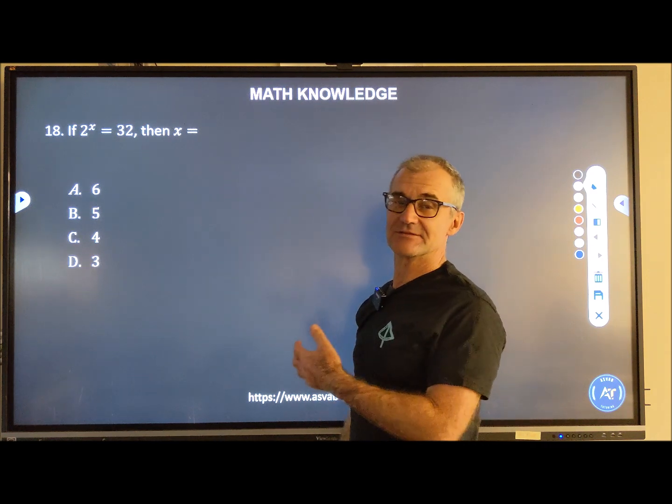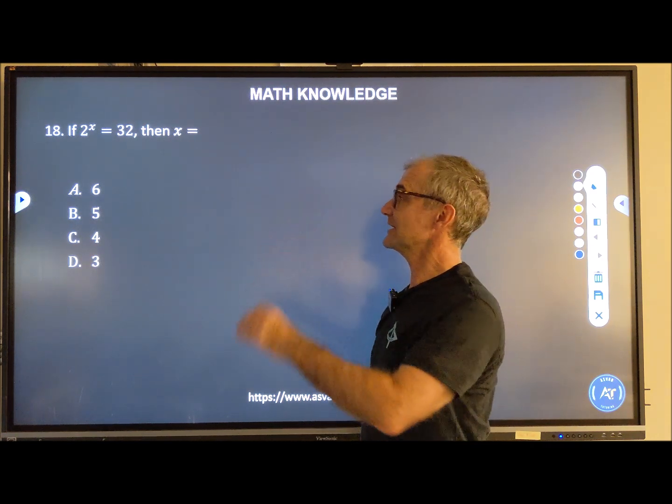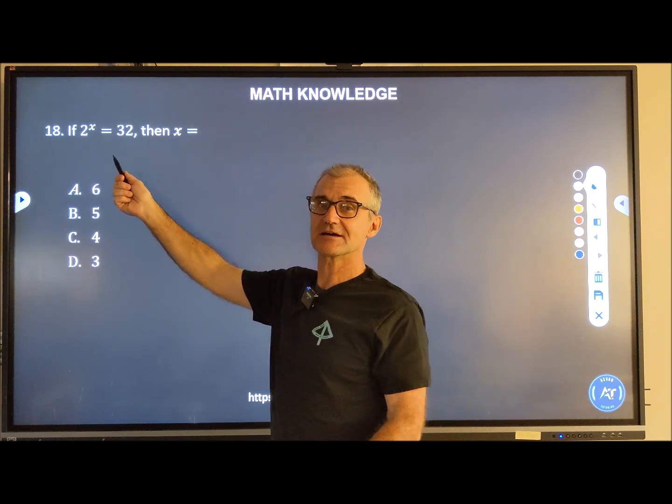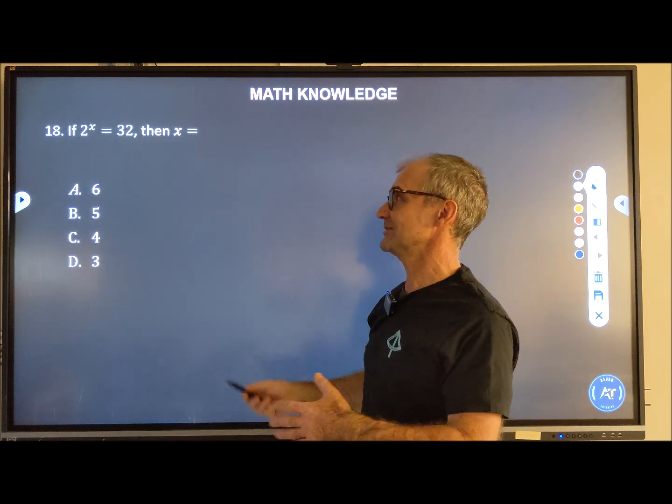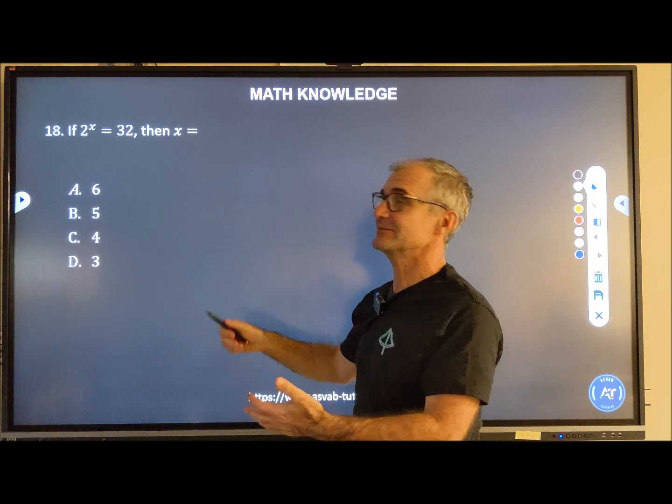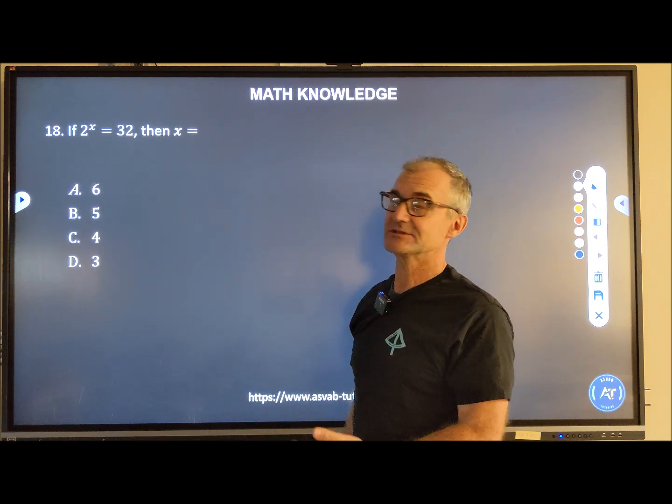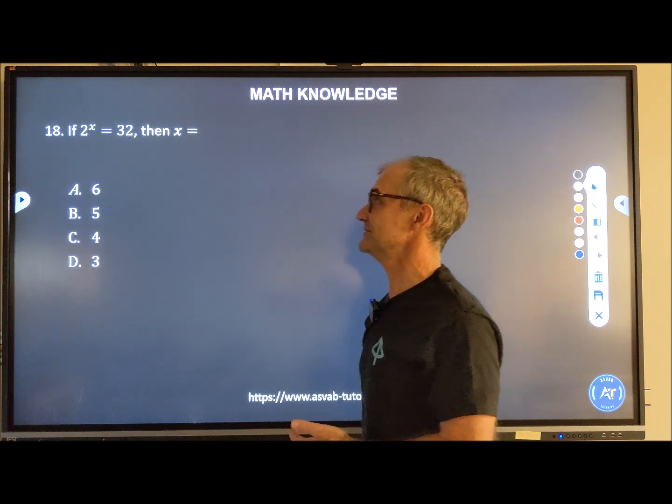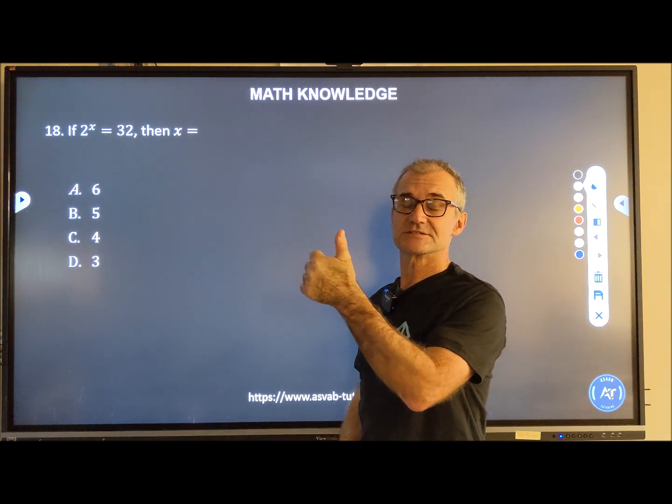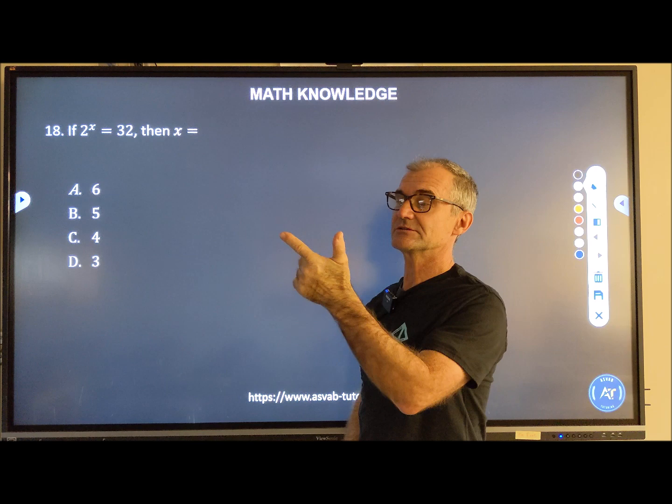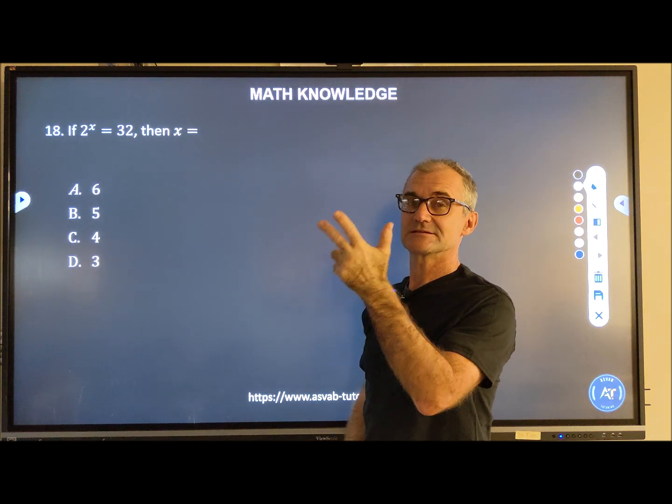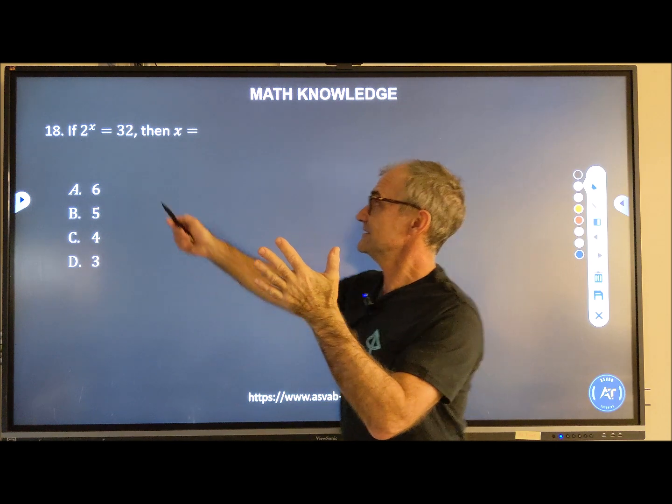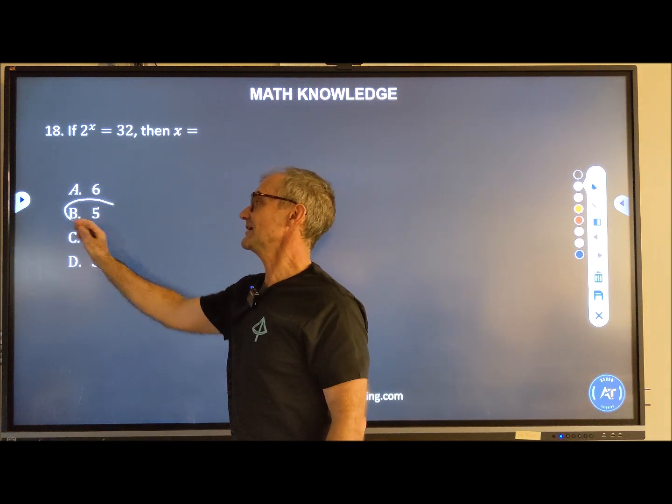Number 18, if 2 to the X equals 32, we have an exponential function. We're looking for an exponent, then find what X is. The way you actually solve that is logarithms, so we're not going to use logarithms or a calculator. It's got to be an exact value, meaning one that I could do in my head. So 2 to what power equals 32? 2 to the first is 2, 2 squared is 4, 8, 16, 32. So 2 to the fifth is equal to 32, so X has to equal 5.